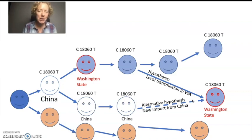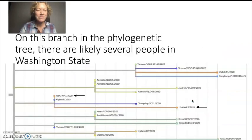First, because a new case from China would have likely been detected. And second, the C18060T mutation is actually rare in China, in Chinese coronavirus samples. And so even if there had been a new case from China, it's unlikely that they would have had this particular mutation.